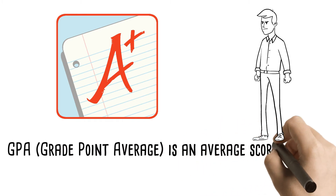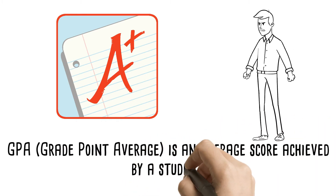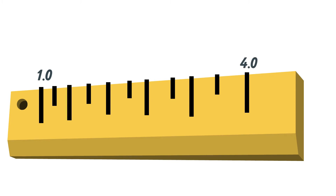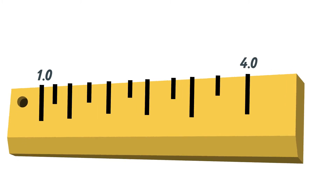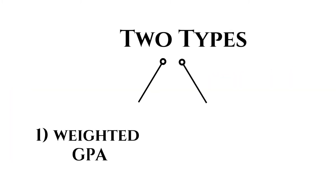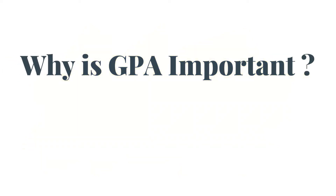GPA is an average score achieved by a student, measured on a scale between 1.0 to 4.0. There are two types of GPA: first, weighted, and second, unweighted GPA.